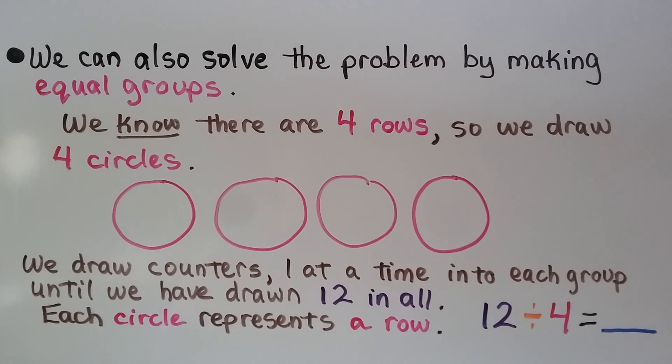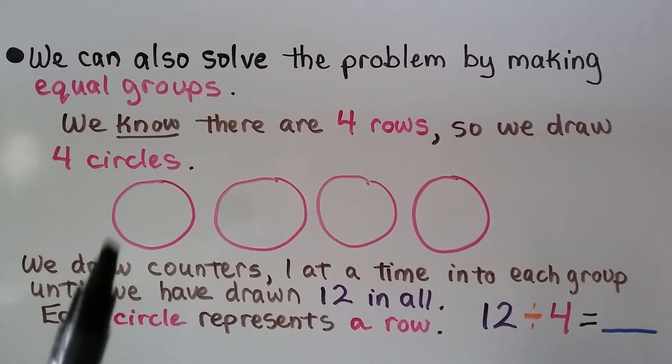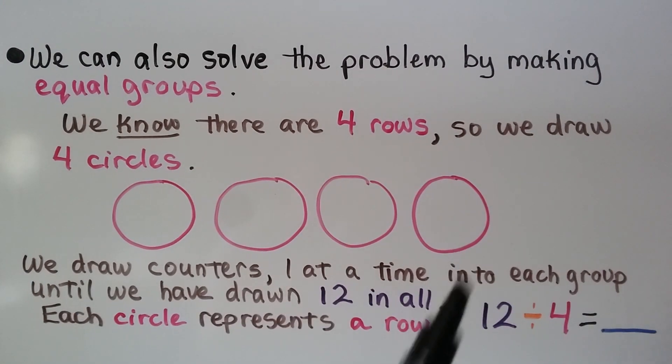We can also solve the problem by making equal groups. We know there are 4 rows so we draw 4 circles. We draw counters one at a time into each group until we have drawn 12 in all. Each circle will represent a row.